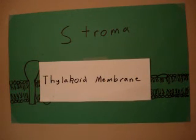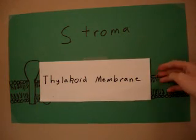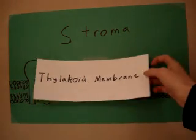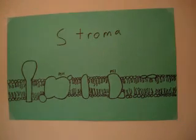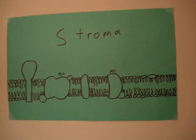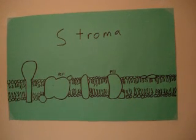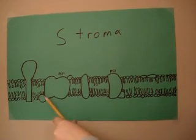Photosynthesis takes place inside chloroplasts. Inside the chloroplasts there is the stroma and thylakoids. In the thylakoid membrane there are photosystems. Inside photosystems there is chlorophyll and other pigments that absorb light rays that excite electrons from water splitting in the reaction center.